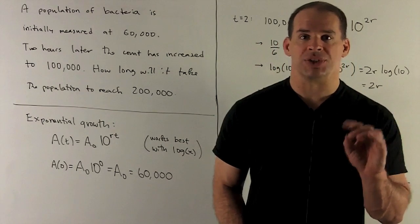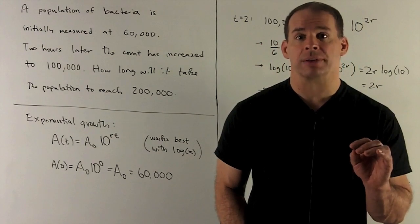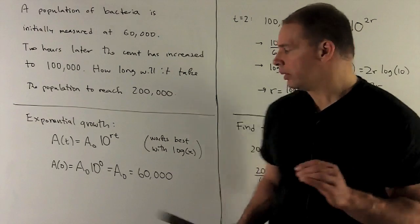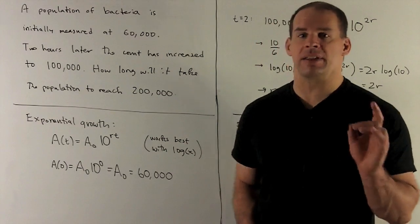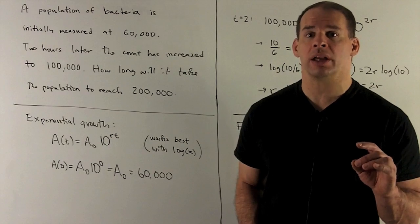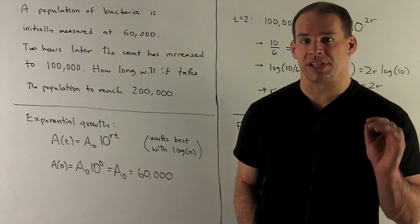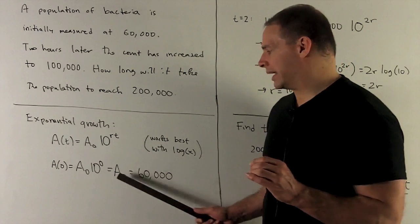At time t equals zero, we have 60,000. So that means A of zero is going to be equal to A₀ times 10 to the zero. 10 to the zero is 1, so A₀ is equal to 60,000. That's just my initial amount.